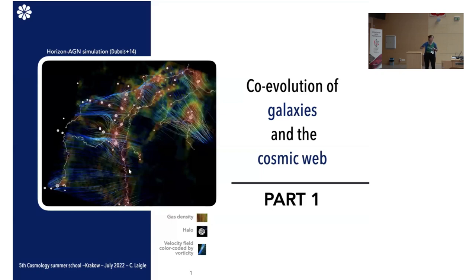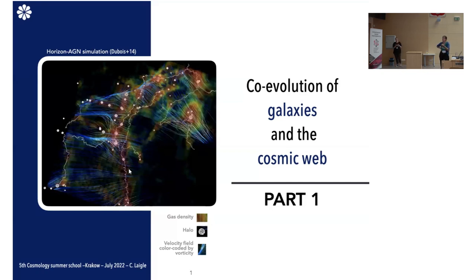I have also represented on this picture velocity field lines, shown as streamlines, color-coded by vorticity — when they are wider, it means matter is rotating more strongly with coherent rotational motion. On top of that, I've added small spheres which are the halos, and inside those halos we have galaxies.